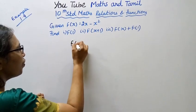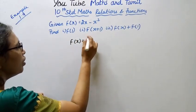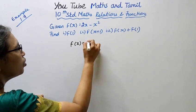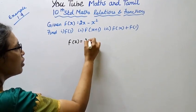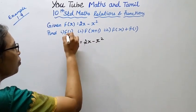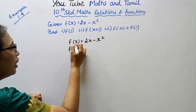f of x equal to 2x minus x square. Now, Part 1: f of 1.